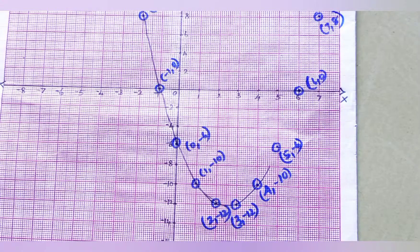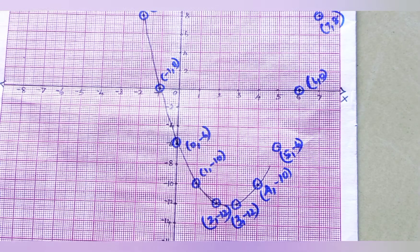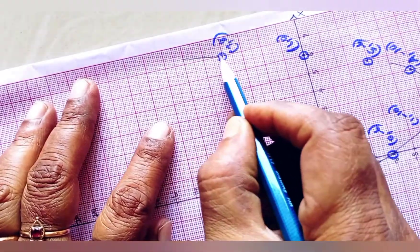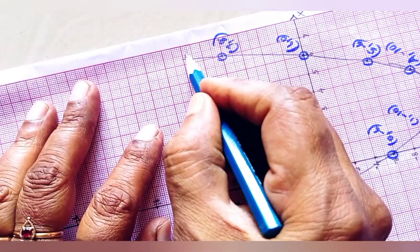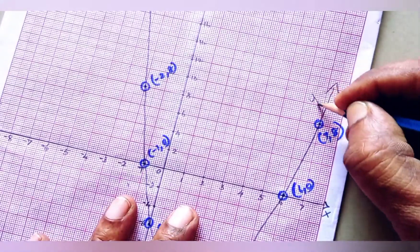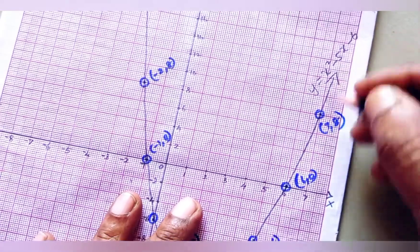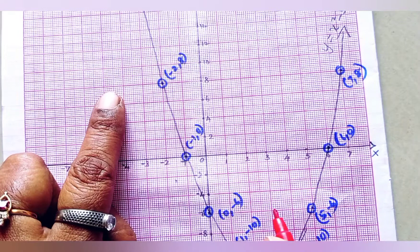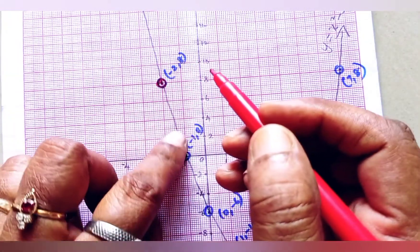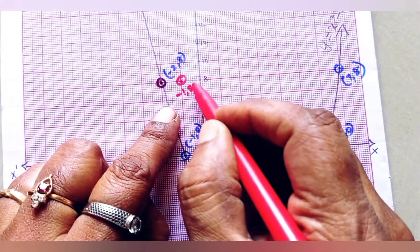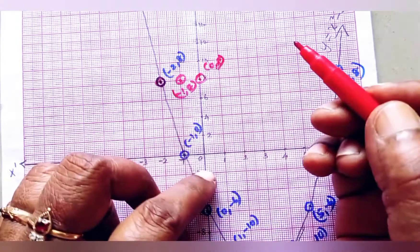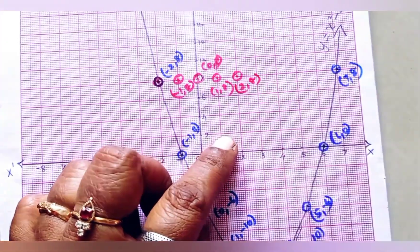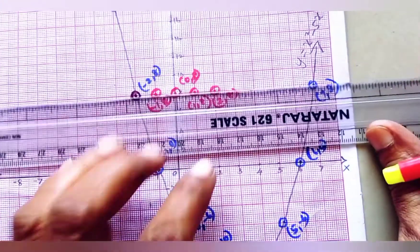Since y equals 8 is a straight line parallel to the x axis, we plot points for y equals 8: (minus 2, 8), (minus 1, 8), (0, 8), (1, 8), (2, 8), (7, 8). We draw a straight horizontal line through these points. The intersection of this straight line y equals 8 with the parabola gives us the solution.